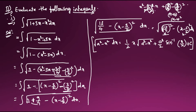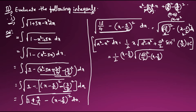Substituting: it becomes (1/2)·(x - 3/2)·√((√13/2)² - (x - 3/2)²) + (a²/2)·sin⁻¹((x - 3/2)/(√13/2)) + C. Here a² = 13/4, so a²/2 = 13/8. The expression inside the root is (13/4 - (x - 3/2)²).